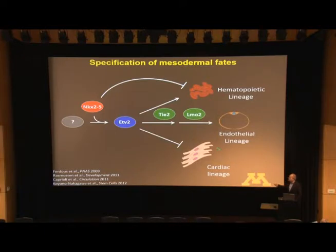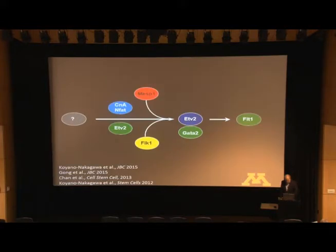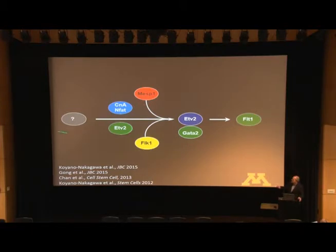Importantly, we showed that ETV2 also in progenitor cells repressed the cardiac lineage, the cardiomyocyte lineage. This slide just further elaborates on the number of upstream regulators for the ETV2 gene.